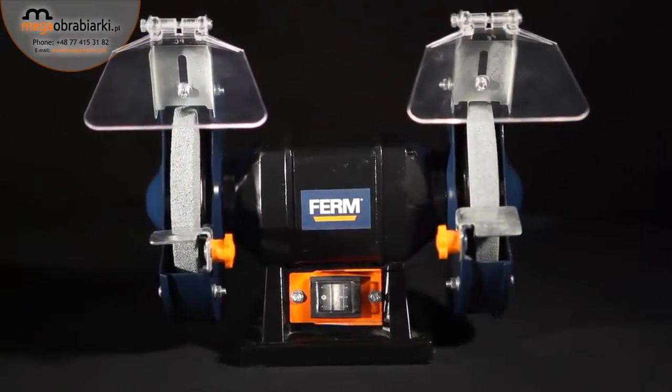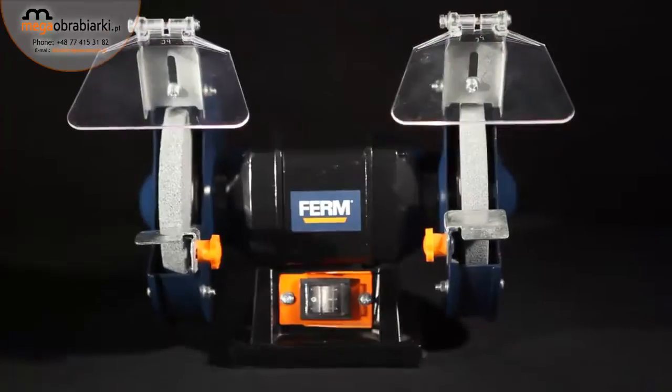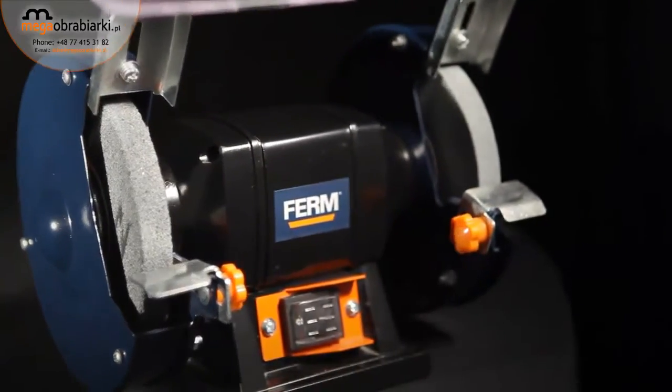This is the Firm BGM 1019 150mm Power Bench Grinder. All round usable for grinding, sharpening, deburring, removing rust and finishing wood and metal.